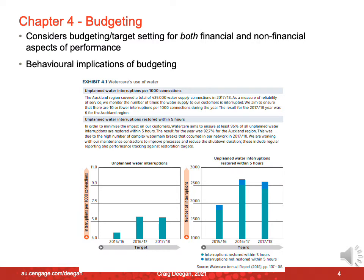Chapter 4 addresses budgeting, but unlike many books, we won't just look at budgeting from a financial perspective. We'll also look at non-financial aspects of performance — whether it's your use of water, generation of waste, budgeting on use of energy and so forth. We'll be looking at both financial and non-financial aspects of budgeting, and we'll also consider the behavioural aspects of budgeting.